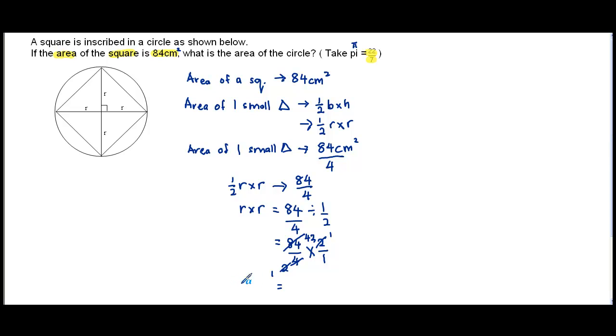So R times R equals 42. We shall leave this as that. That means you don't have to find the value of R. In this case, it's not necessary. So we shall then go on to the next part of the question.